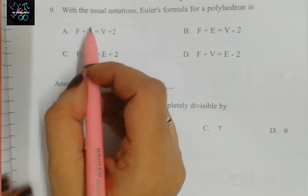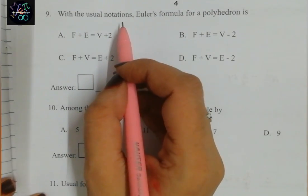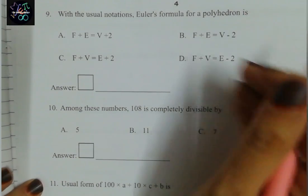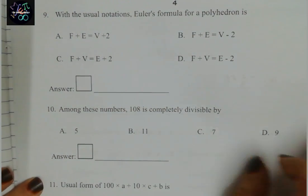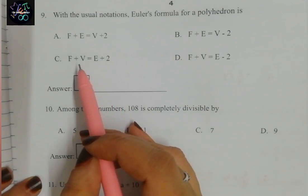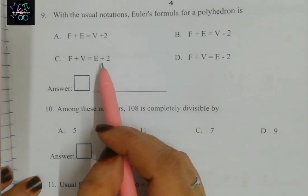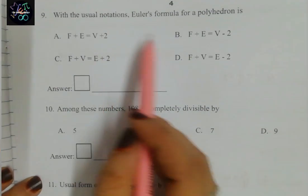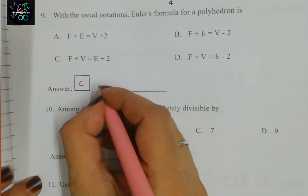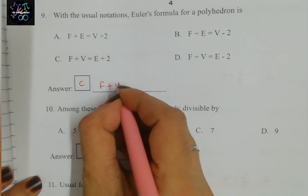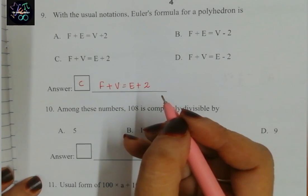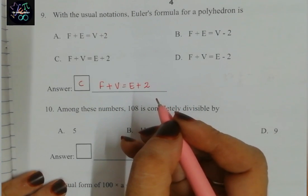Question 9: with the usual notation, Euler's formula for a polyhedron. We know Euler's formula is F + V = E + 2. Looking at the options, the correct answer is C: F + V = E + 2.